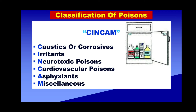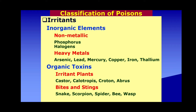When you look at irritants, you have a number of subdivisions, as you can see from this slide. Two broad categories: inorganic irritants or inorganic elements, and then organic toxins. Under inorganic elements, there are two kinds: non-metallic, like phosphorus and halogens, and then the heavy metals or metallic irritants — arsenic, lead, mercury, copper, iron, thallium, and many others.